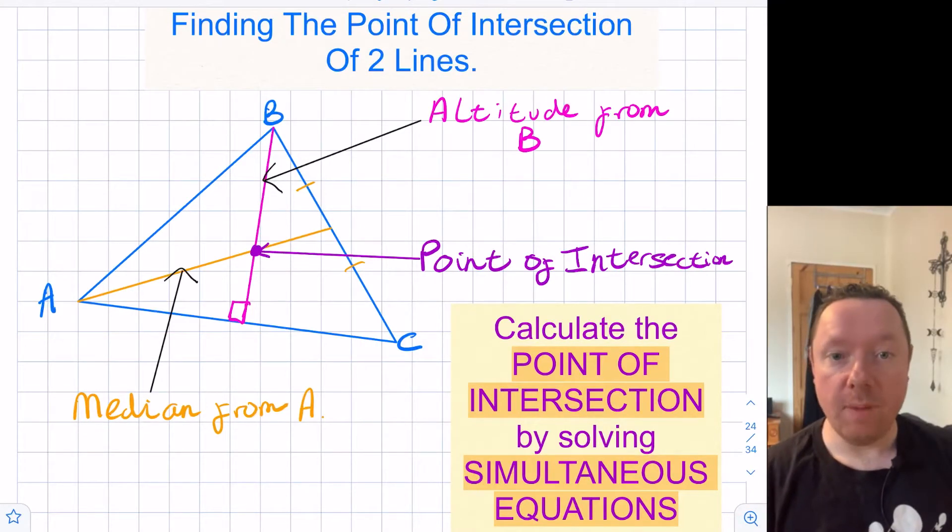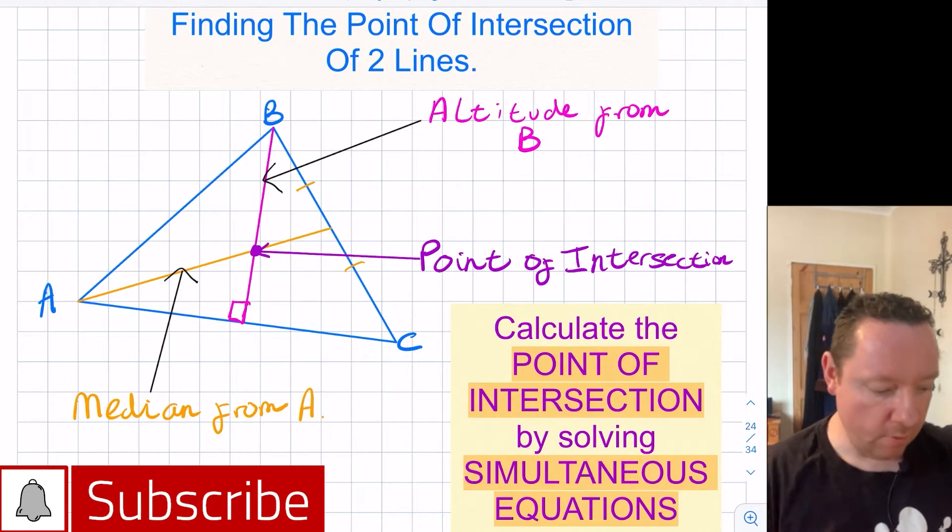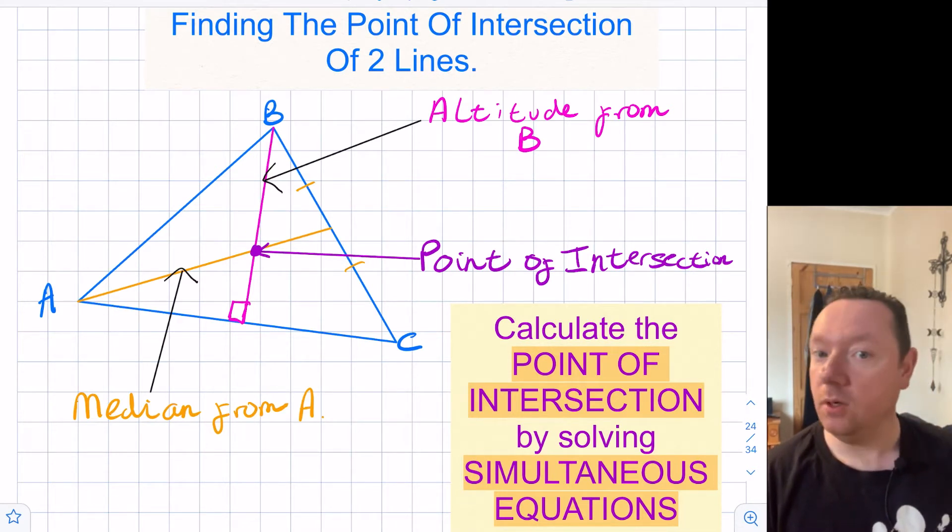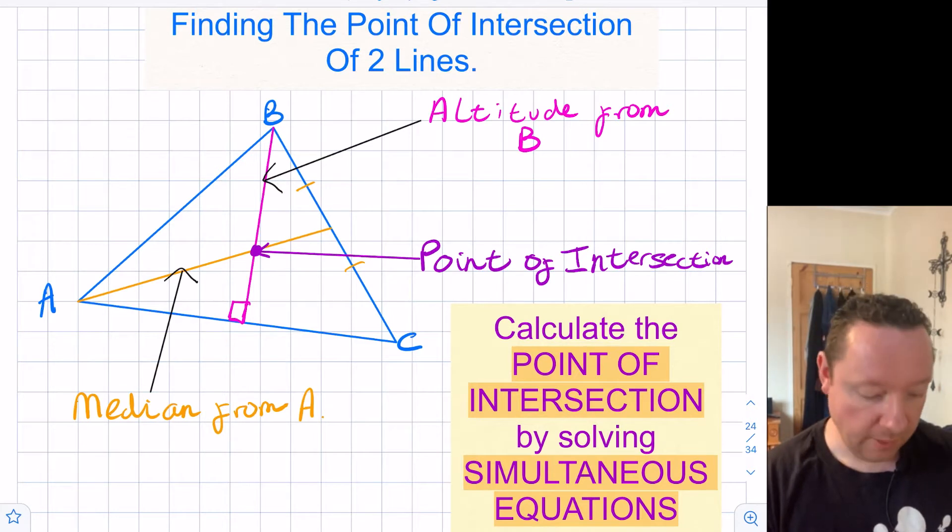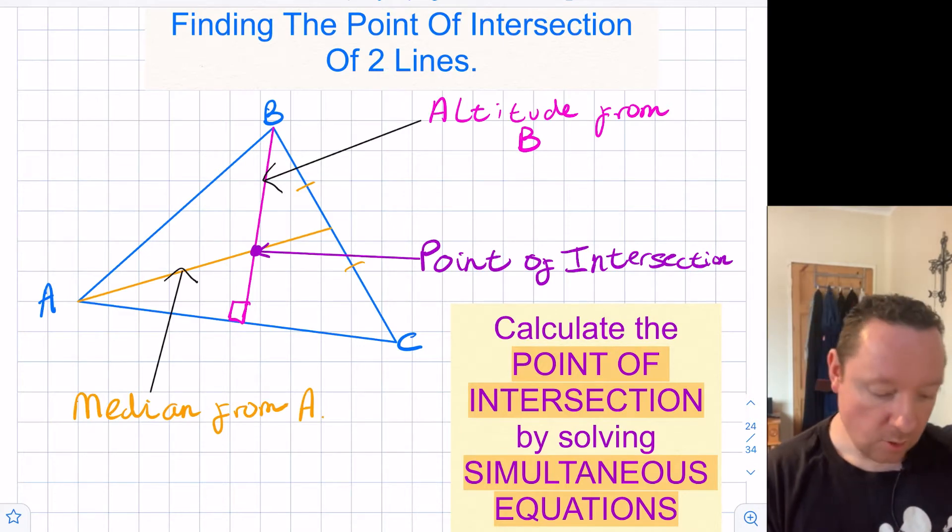Mr Claren here from Claren Maths. Today we're looking at higher maths, still on straight lines. We're almost at the end. We're looking at the point of intersection between two lines. So if you have two lines like an altitude of a triangle and a median meeting together, what are the coordinates of that point? Let's look at this on a diagram. We've got a triangle drawn. A median from A would be the line that goes from A and cuts the opposite line in half, not necessarily at right angles. The altitude from B would be the line that goes from B and cuts the opposite line at right angles, but not necessarily in half. The point where the two lines meet is the point of intersection.